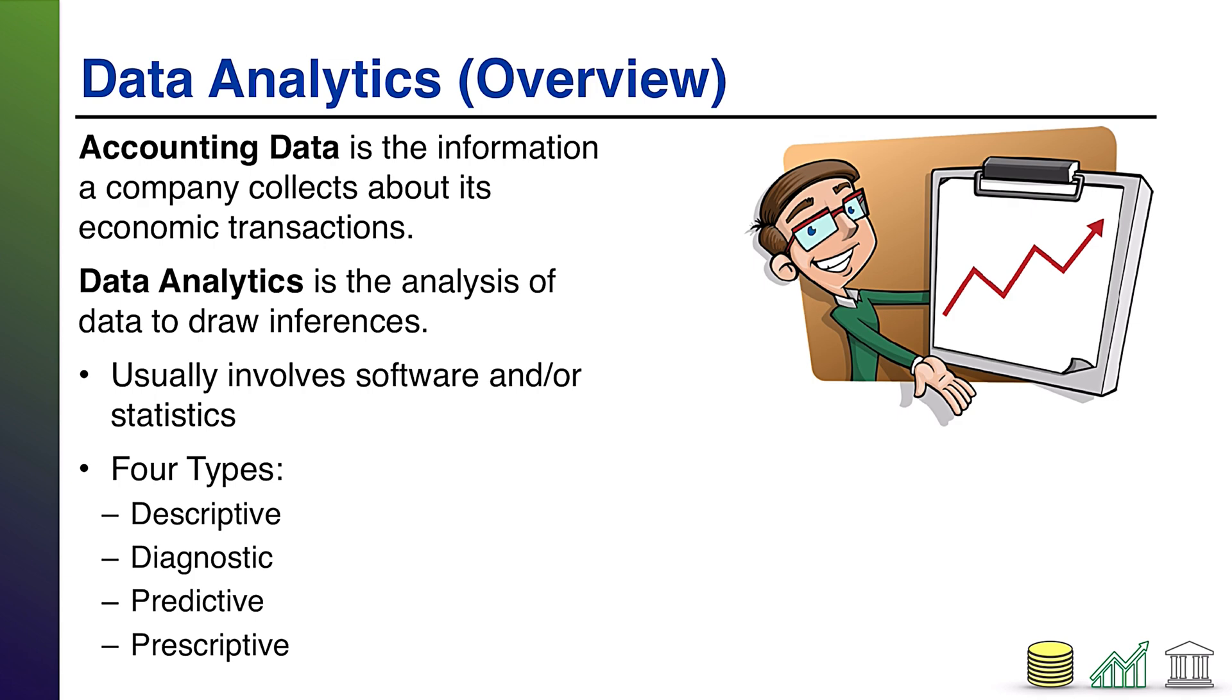So the first type I'm going to talk about is descriptive. Descriptive is simply a way of analyzing what happened. Now, of course, this is the most basic analytic that all companies are going to want to do. What happened to our profit? What happened to our sales? What happened to our expenses? And so, to walk you through these four things, I'll pick on Apple. Apple's a company that most people are familiar with, at least familiar with the brand, with the products.